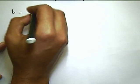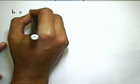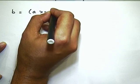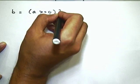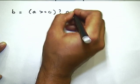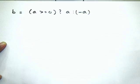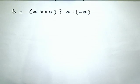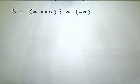We already have other means of writing this. For example, using a conditional expression: 'b = (a >= 0) ? a : -a', which also gives you the absolute value.